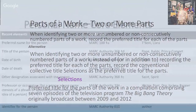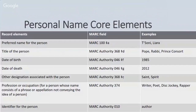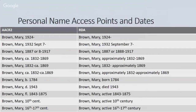Thinking about personal names, whether in the 100 or 700 fields, here are the core elements: the preferred name, their title if there is one, when they were born, when they died, any other designations. You can include professions as an option. Then the identifier — are they the author, the director, the producer? With AACR2, you'll see a lot of abbreviations, but with RDA we spell those things out — so again, with the user in mind, we make sure they don't have to guess what's going on.